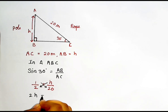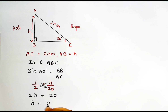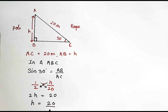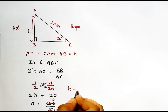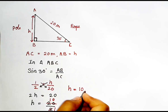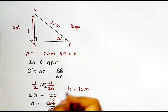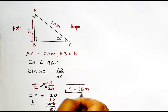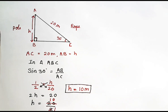Doing cross multiplication, we get 2h = 20, so h = 20 / 2 = 10 meters. The height of the pole is 10 meters. According to the question we were supposed to find the height of the pole, and we have found it.